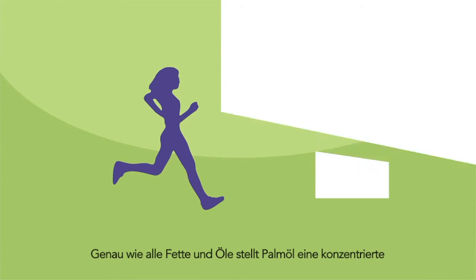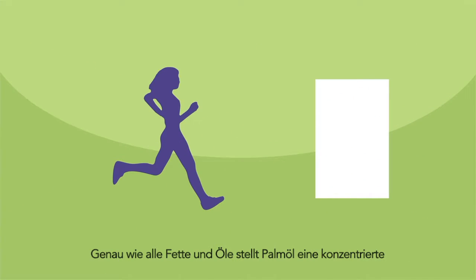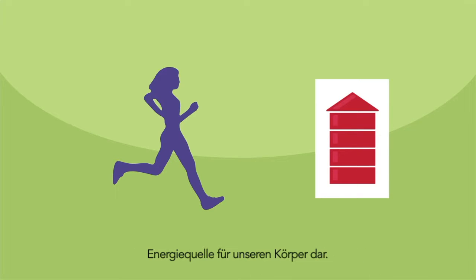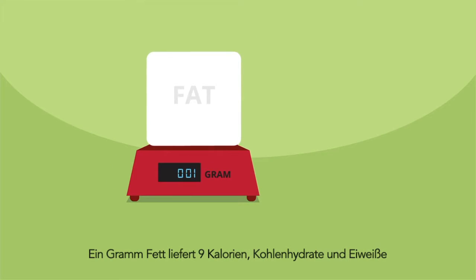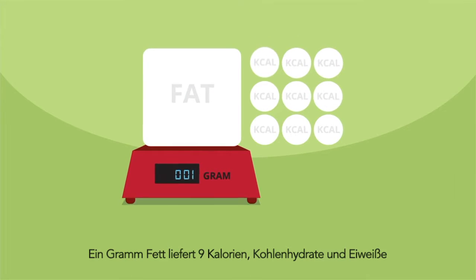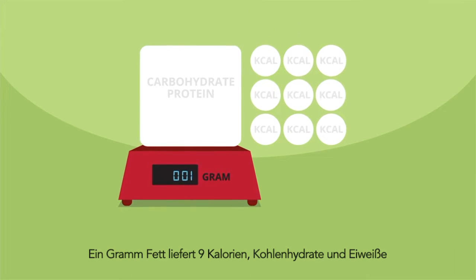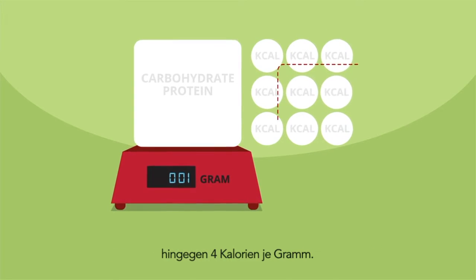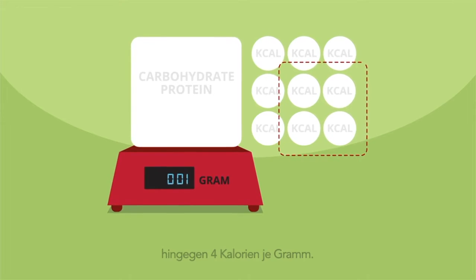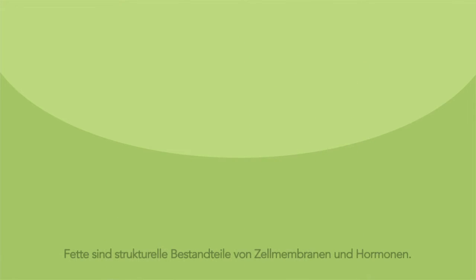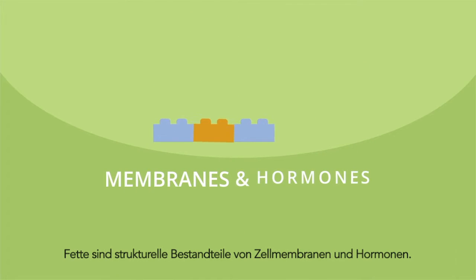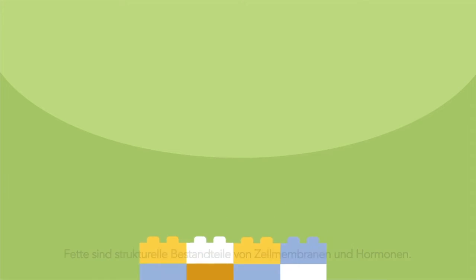Like all fats and oils, palm oil is a concentrated source of energy for our body. One gram of fat provides 9 calories, while carbohydrates and proteins provide 4 calories per gram. Fats are structural components of cell membranes and hormones.